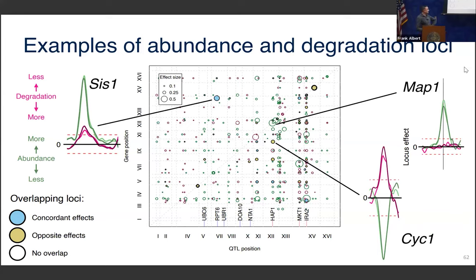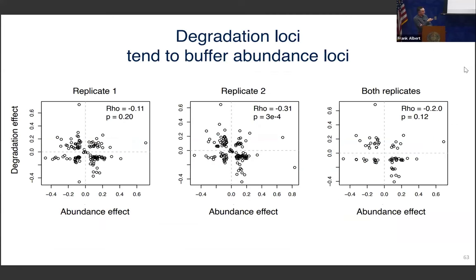These discordant cases are puzzling to us. Our current best thinking is that maybe this is some kind of buffering, where the primary effect changes the abundance and then the cell tries to counter this abundance difference by altering degradation, but ultimately fails because we still see an abundance difference — so it's not perfect buffering. If we look at all the loci and correlate their abundance and degradation effects, this correlation coefficient is always negative, suggesting there is quite a bit of this buffering going on.